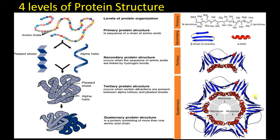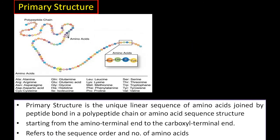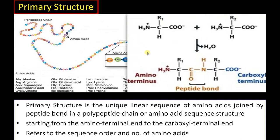Now let's look at the detail of each structure. Primary structure is simply the linear sequence of amino acids joined by peptide bonds, with an N-terminal and a C-terminal. It refers to the sequence, order, and number of amino acids. The carboxyl group of one amino acid and the amino group of the next join by releasing a water molecule, forming the peptide bond — the C(=O)-NH bond.